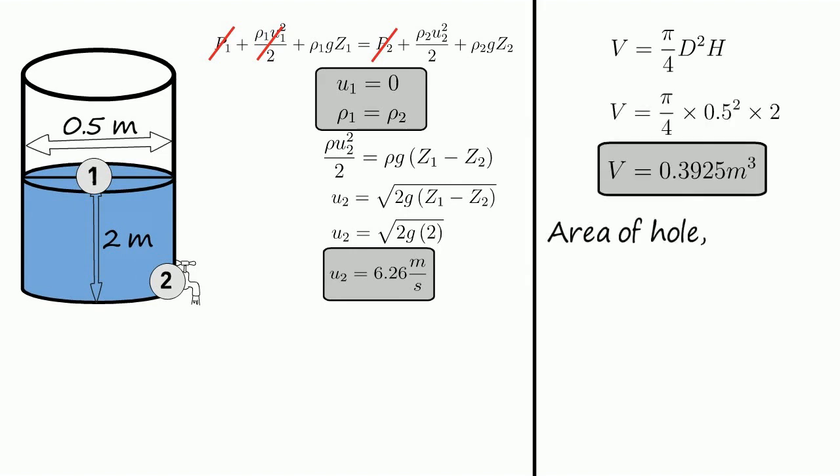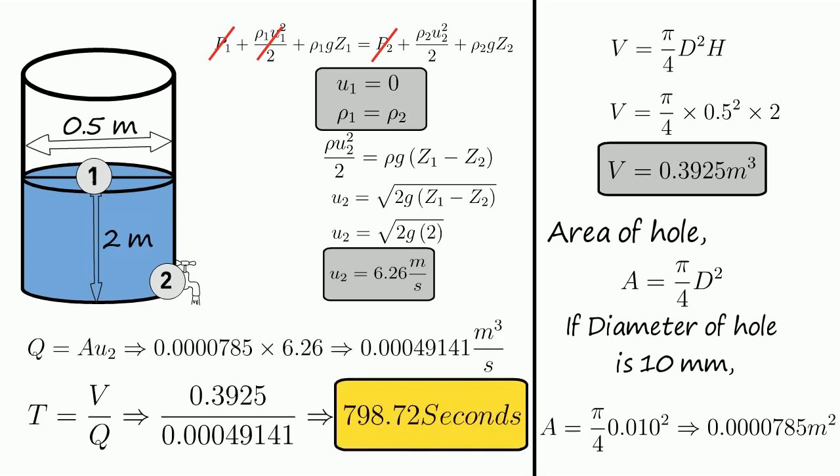If we know the volume of the tank and the area of the hole from which water is coming out, then we can calculate the time discharge flow and finally the time by which Max's tank will be empty.